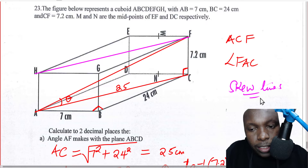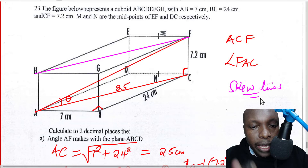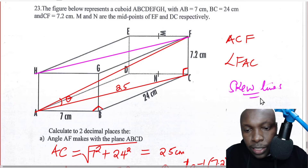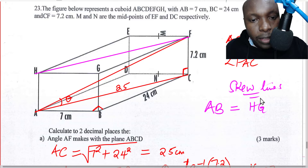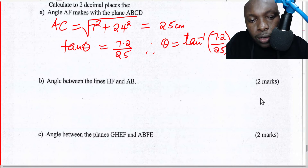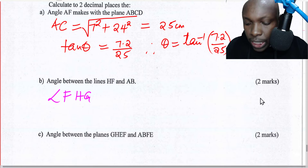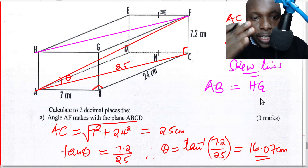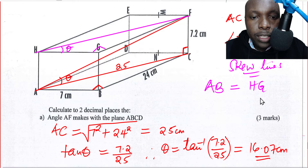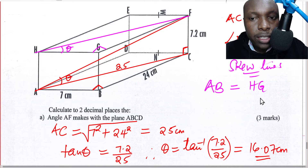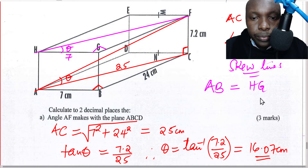After translating, the angle between HF and AB (now translated as HG) will be angle FHG. That is the angle we need to find. Looking at triangle HGF, it is right-angled at G, and we already have HG = 7 and GF = 24.